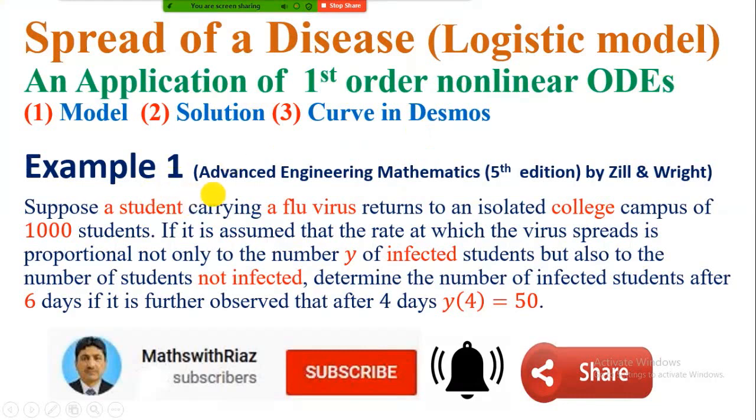The example that I will solve today is taken from Advanced Engineering Mathematics fifth edition by Zill and Wright. In this example it is mentioned that in an isolated college campus initially there is only one student who is infected from a disease or carrying a flu virus.